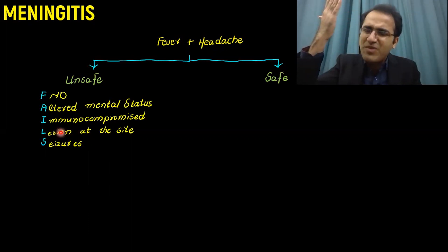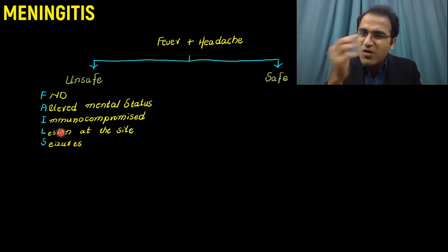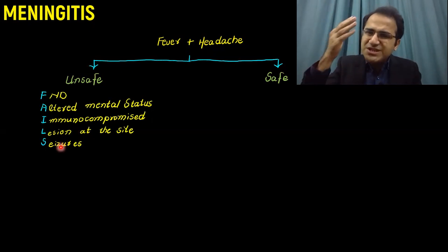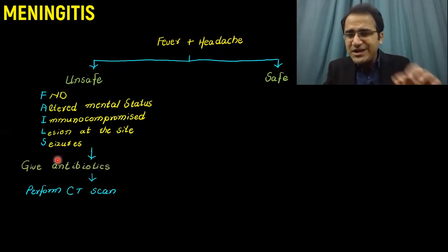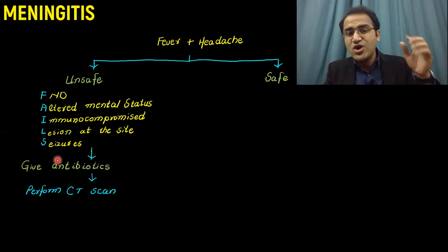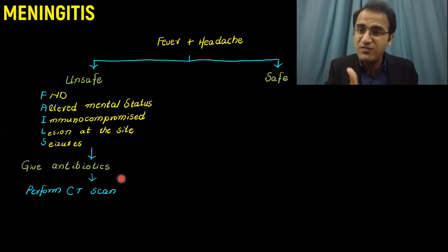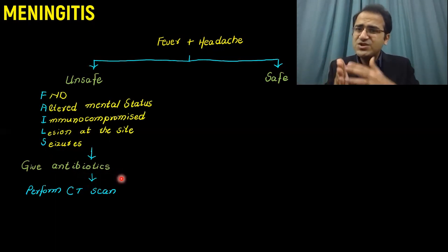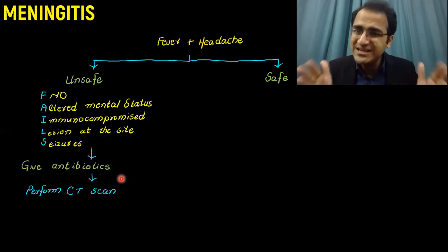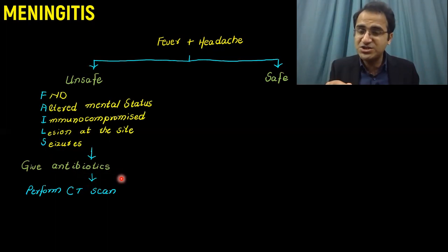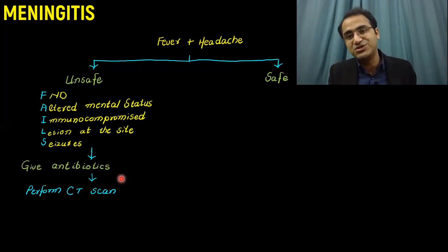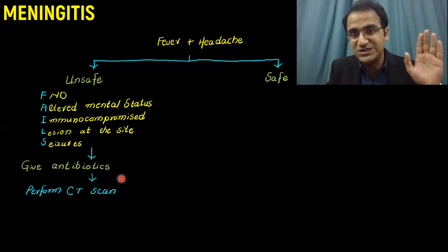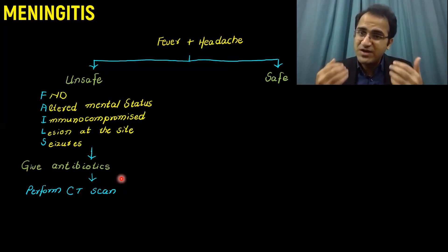In unsafe patients, give antibiotics immediately and send the patient for CT scan to rule out a brain mass. We give antibiotics because we cannot delay treatment — we must save the patient from permanent neurological damage. You cannot wait for lumbar puncture results before starting antibiotics. Give antibiotics to save the patient's life, then proceed with CT scan.